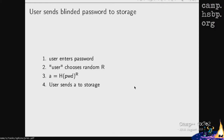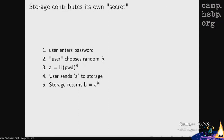You send this A value to the password storage. The storage — which can be your phone, an online service, or a dedicated hardware device — takes the random 32-byte salt K that it generated when you registered, and raises this A value to the power of K. So B is really the password hashed, multiplied by the random blinding factor R, and again multiplied by the salt K stored by the password storage.